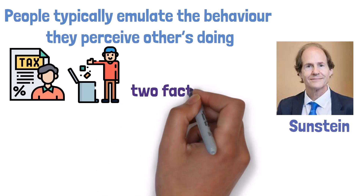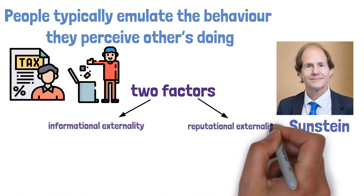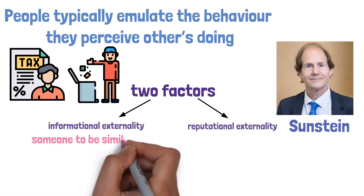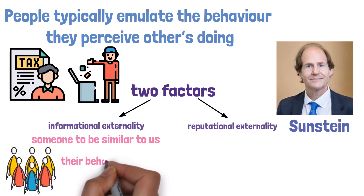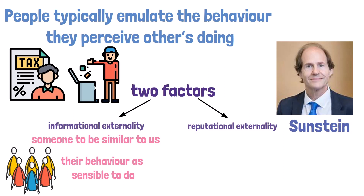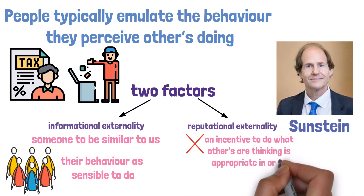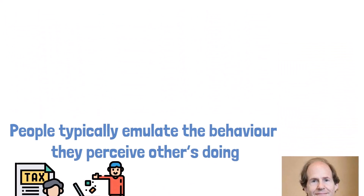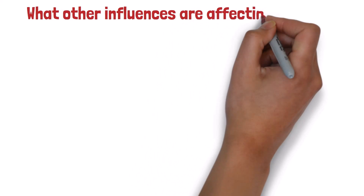This social influence is formed by two factors: informational externality and reputational externality. Informational externality is when we perceive someone to be similar to us — for example, they belong to the same group — and we view their behavior as sensible to follow. Even if you perceive another's behavior to be fake or false, the actions create an incentive to do what others think is appropriate in order to maintain or develop a positive reputation. But what other influences are affecting group decision-making?